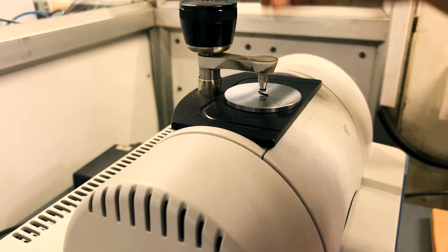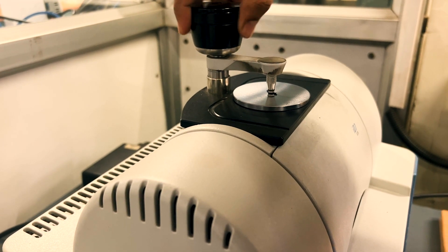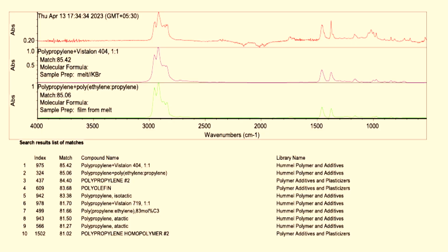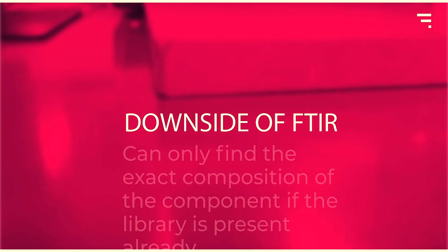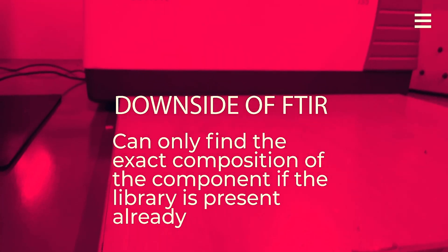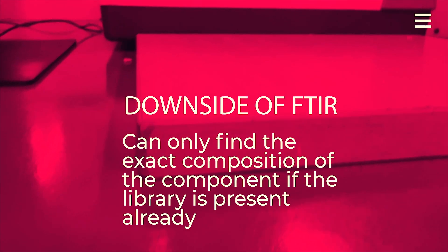Next, we're going to look at this car dashboard material. Just like before, we cut a portion of the sample and place it under the instrument. The spectrum shows the sample is made up of polypropylene combined with polyethylene. The downside is that we cannot find the exact composition of polypropylene mixed with polyethylene unless that specific combination is already present in our library.